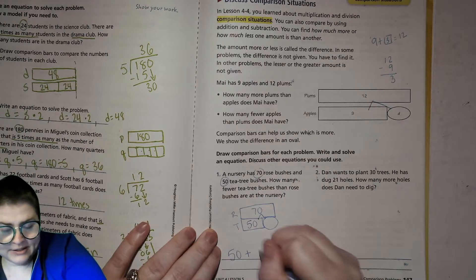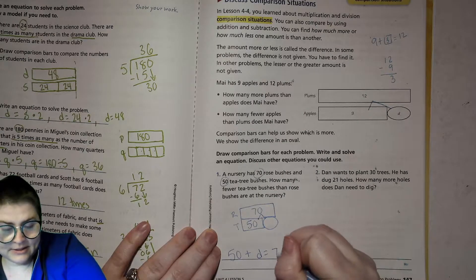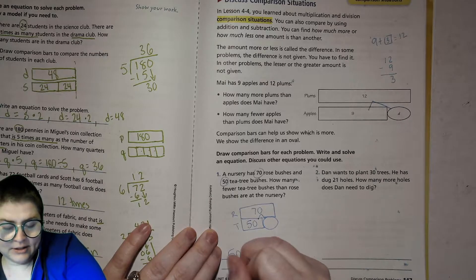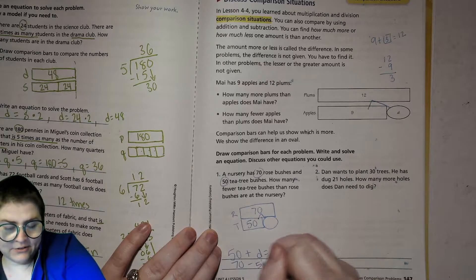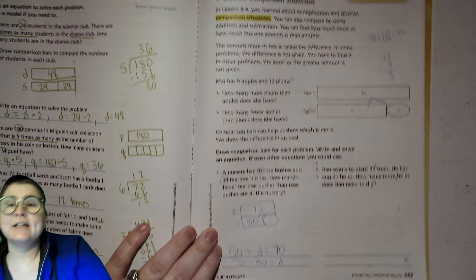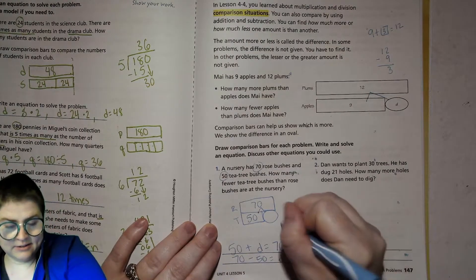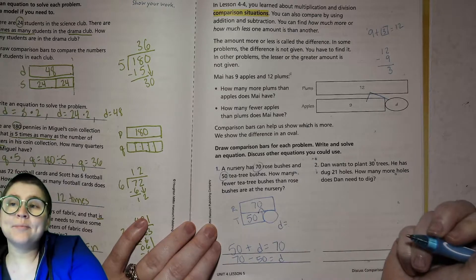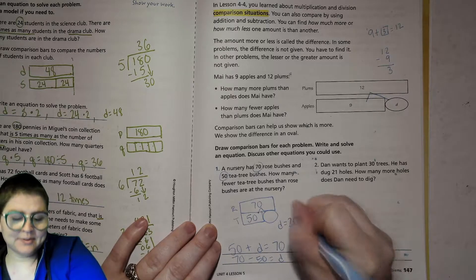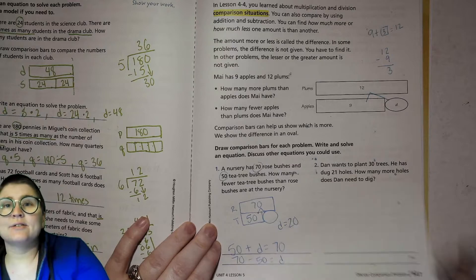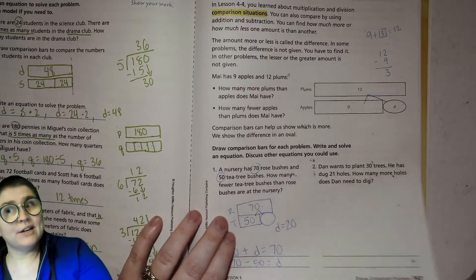We'll find that by asking 50 plus d equals 70, or 70 minus 50 equals d. In both cases, d equals 20. Good job! Now try this one on your own, see how you do.